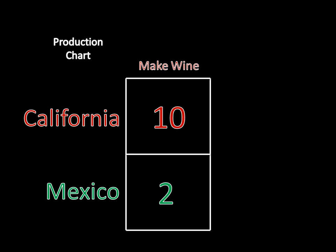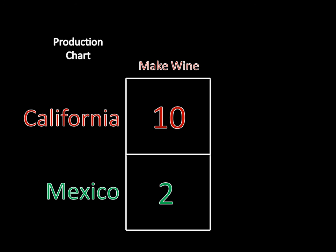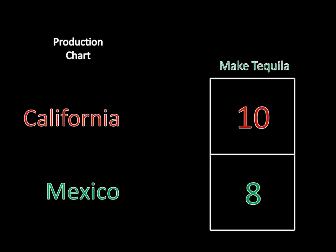Let's take a look at the production charts. This is the same production chart as before for making wine, where California, for a day's worth of labor, can make 10 bottles of wine, whereas a Mexican worker can only make two bottles of wine for a day's labor — because California has the Napa Valley region and Mexico doesn't have a very good climate for making grapes. Now, this is where we're switching things up: California suddenly has a magical way of making agave, and can make 10 bottles of tequila for one day's worth of labor, while Mexico can only make eight bottles. So California is better than Mexico at making both products.